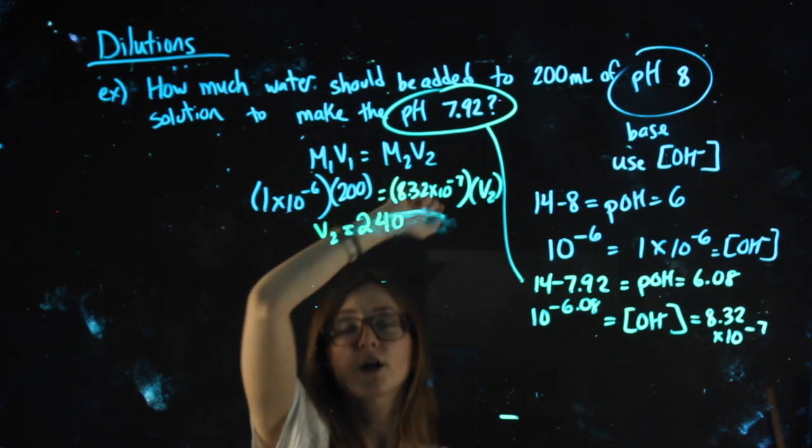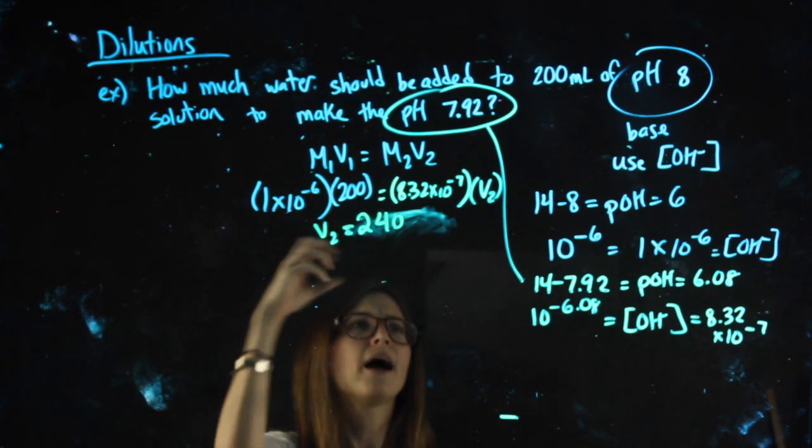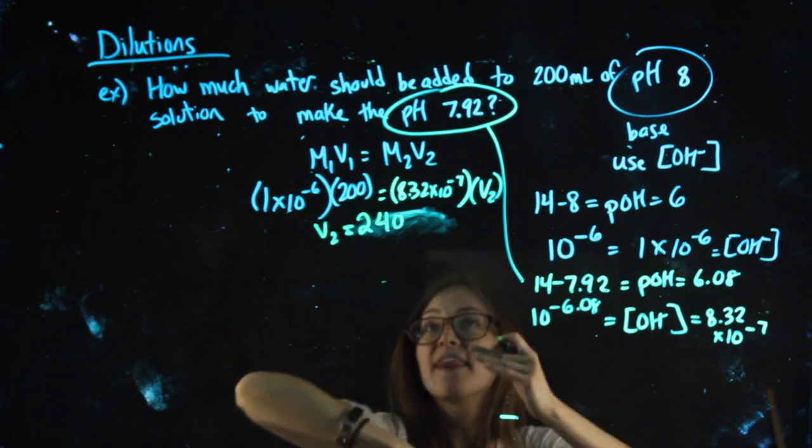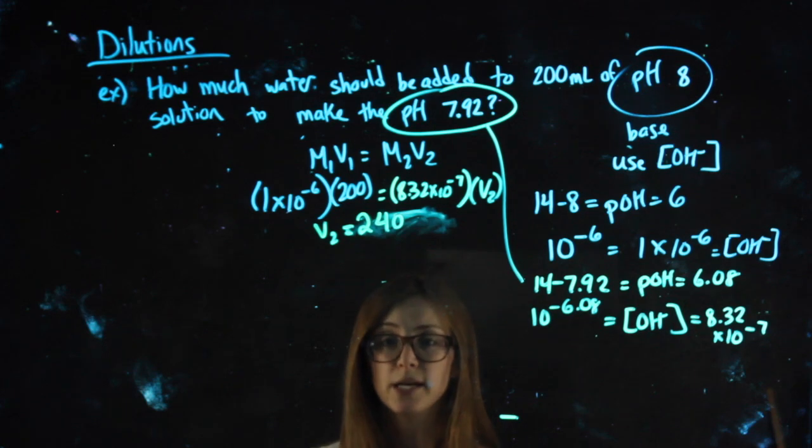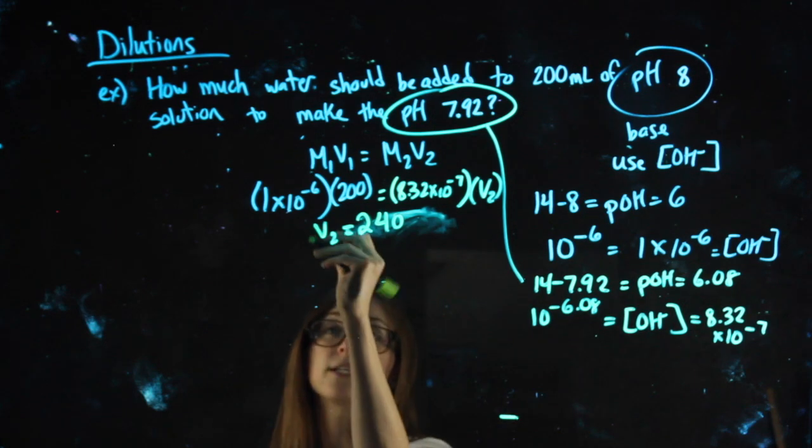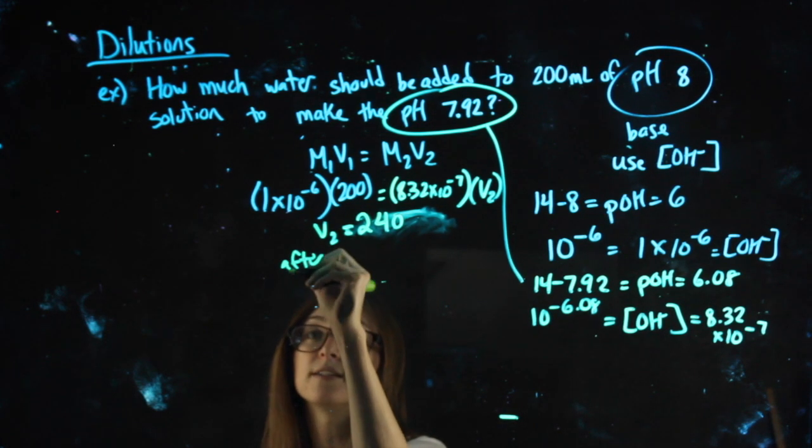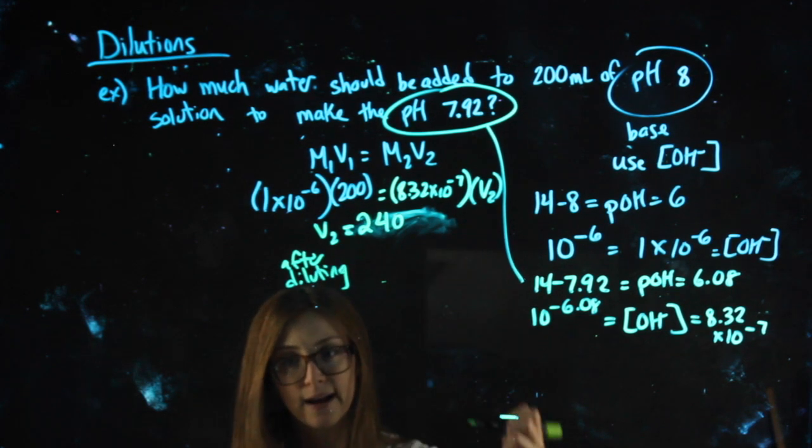It says how much water should be added. So remember, I have 200 milliliters of this stuff. Then I dilute it, and 7.92 is its pH. V2 represents the volume after diluting, not how much water I added.